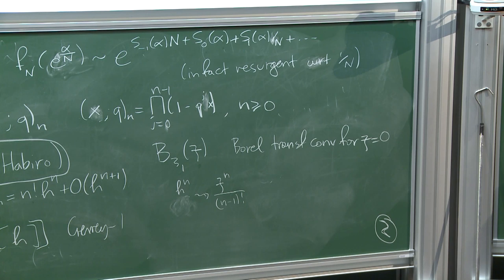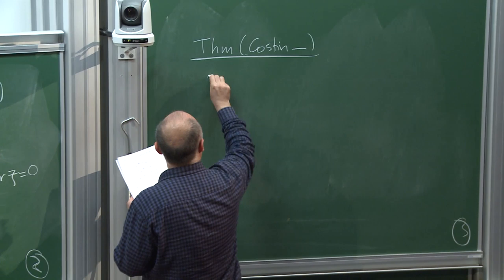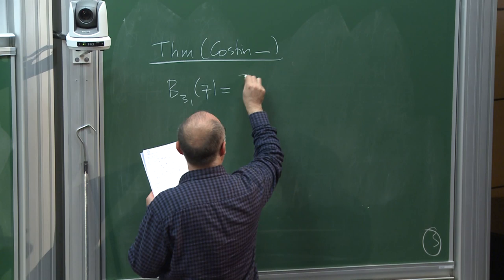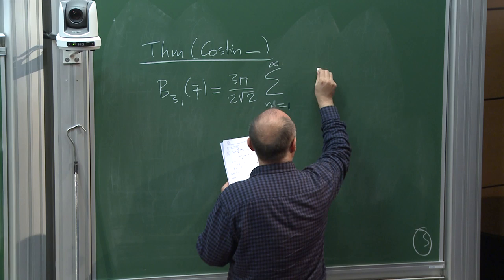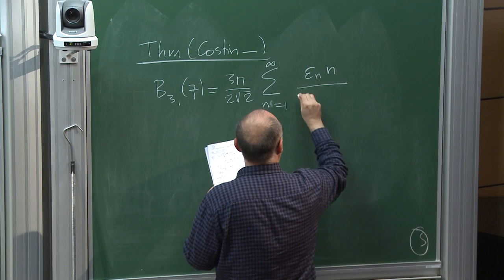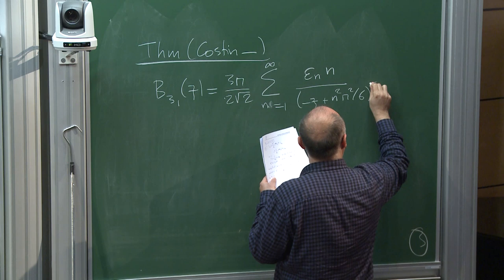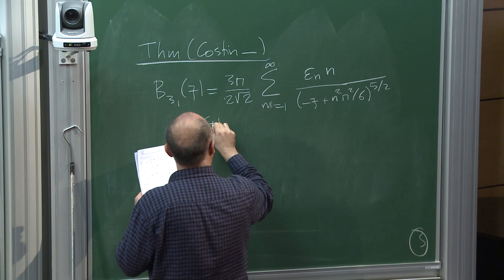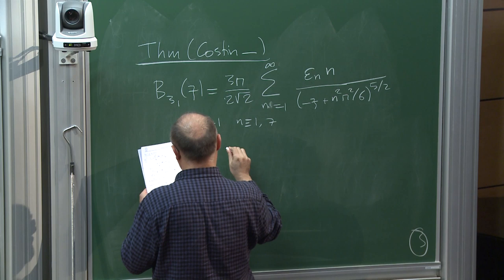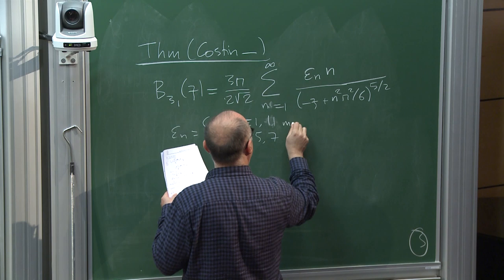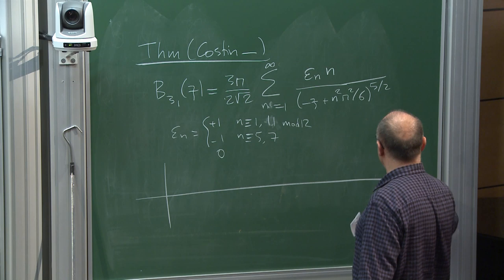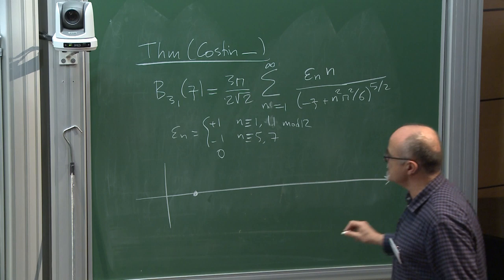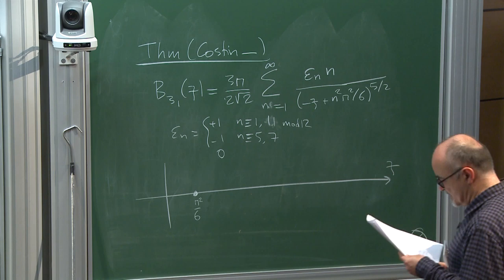The formula is: the Borel transform is a sum of ε_n · n^{5/2} / (n²π²/6)^{5/2}, where ε_n equals +1 if n is congruent to 1 or 11 mod 12, equals −1 if n is congruent to 5 or 7 mod 12, and 0 otherwise. In particular, this says that in the Borel plane all singularities lie on the real axis, the nearest is at π²/6, the next at 25π²/6, and they are not equally spaced.